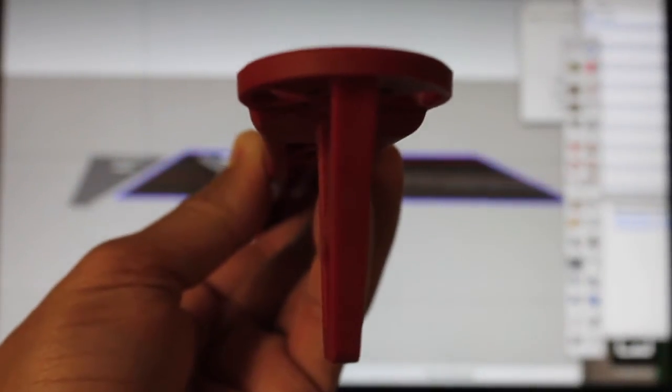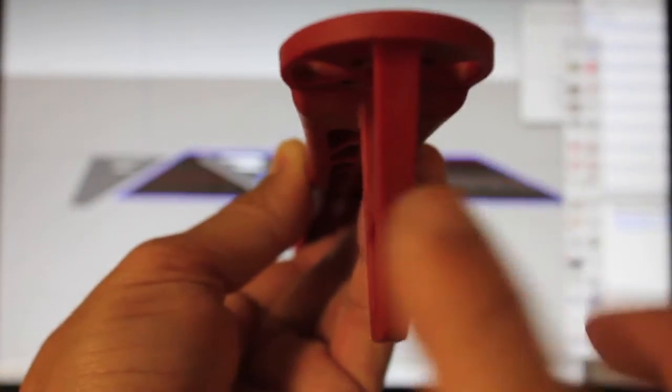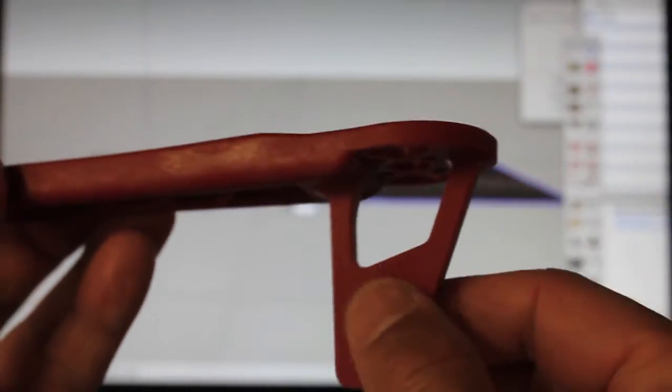So assuming this arm prints accurately and fits well, I'm going to have one on each side of the DJI landing gear, if you can call it that.